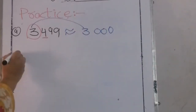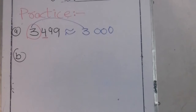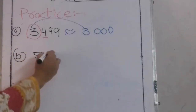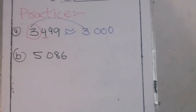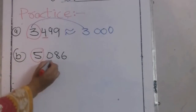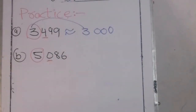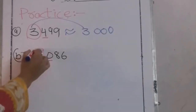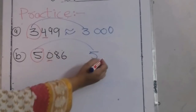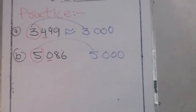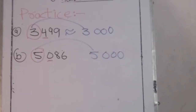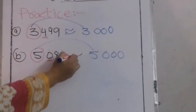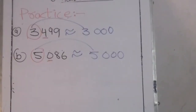Part B: 5,086. We circle the digit at the 1000 place and underline the digit next to the circled digit — in other words, the digit at the 100 place. The underlined digit is a weak number, so it can't push up 5. The 5 remains the same. All digits after the circled digit become 0 in the final answer. So 5,086 becomes 5,000.